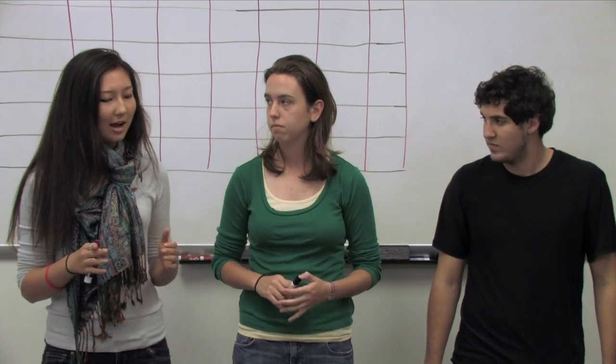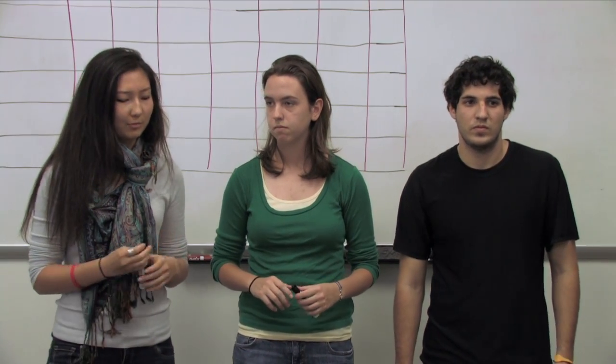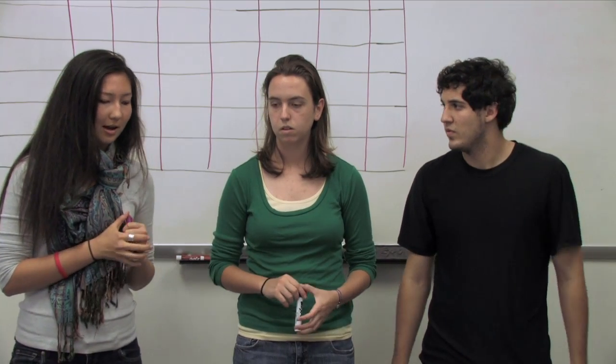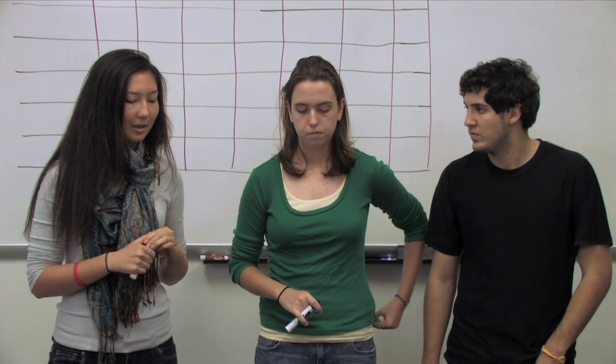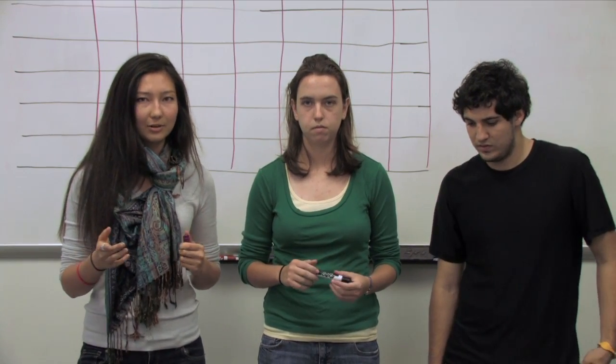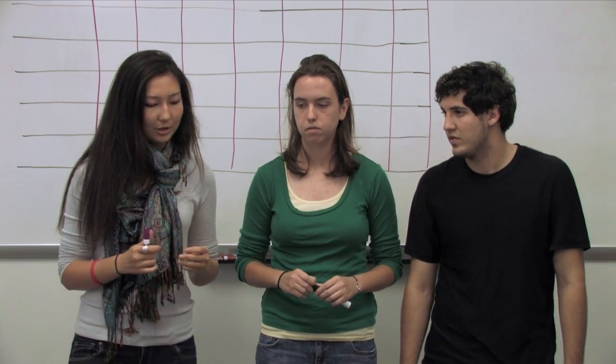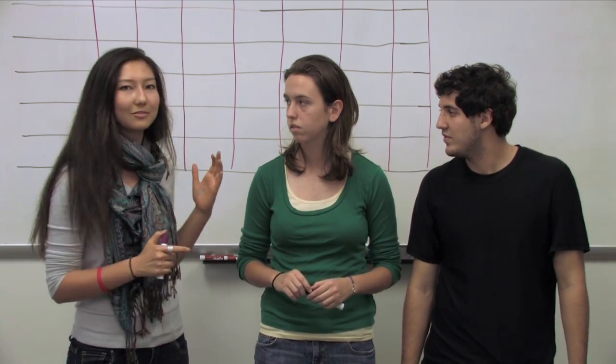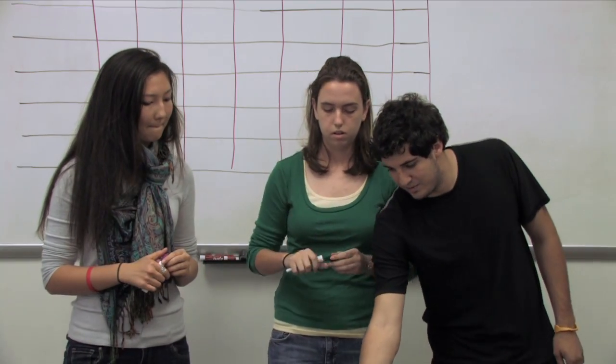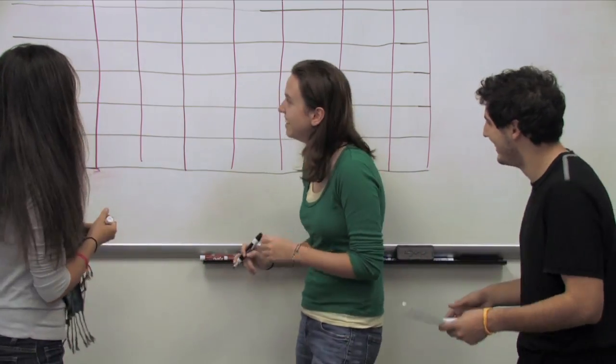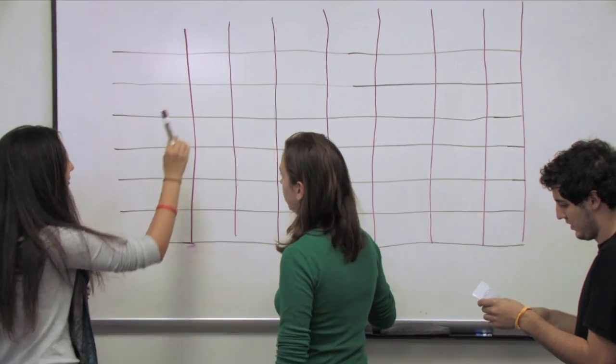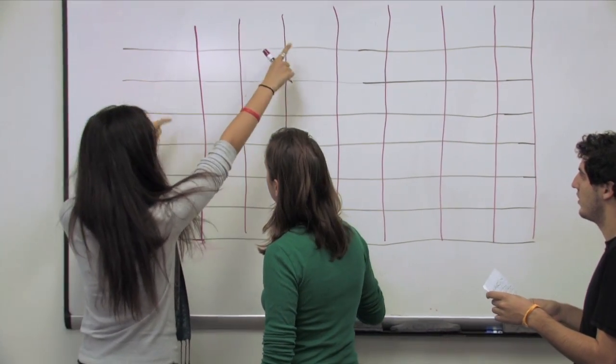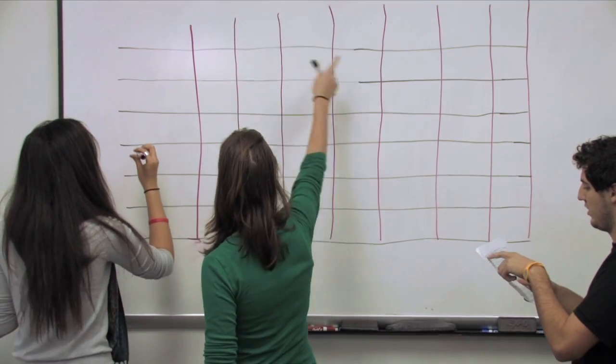So we have our six design criteria but we're not sure which one is the most important or which one we should put the most emphasis on. So we're going to walk through a PCC chart which is going to help us rank and decide based off of the information that we gathered while we were interviewing our clients. We're going to decide which objectives are going to be the most important for our project.